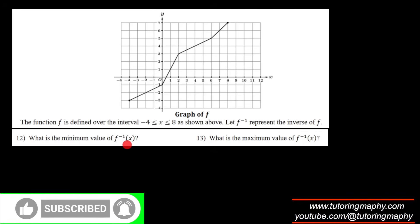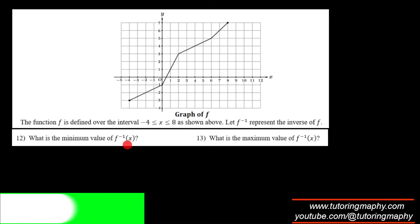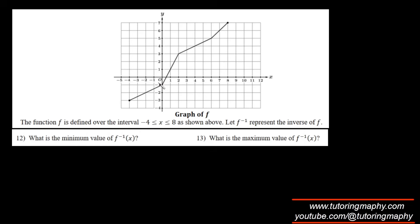The minimum value of f⁻¹(x) is the minimum x-value of the original f function, since x and y interchange. The minimum x is -4, so the answer is -4. The maximum value of f⁻¹ is the maximum x-value of f, which is 8.